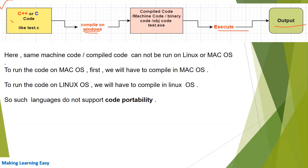So this is the whole process: you write a code, compile it, execute it, and get the output. The same machine code or compiled code cannot be run on Linux or Mac operating systems. If we try to run this machine code on a different operating system like Linux or Mac, it will not run. This is called a platform dependent programming language — C and C++ are platform dependent languages.